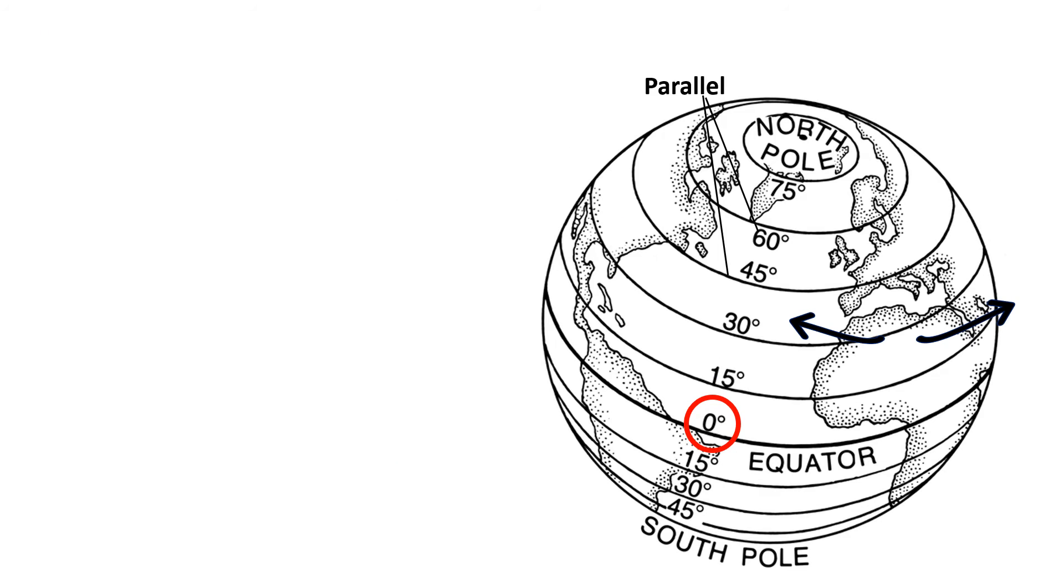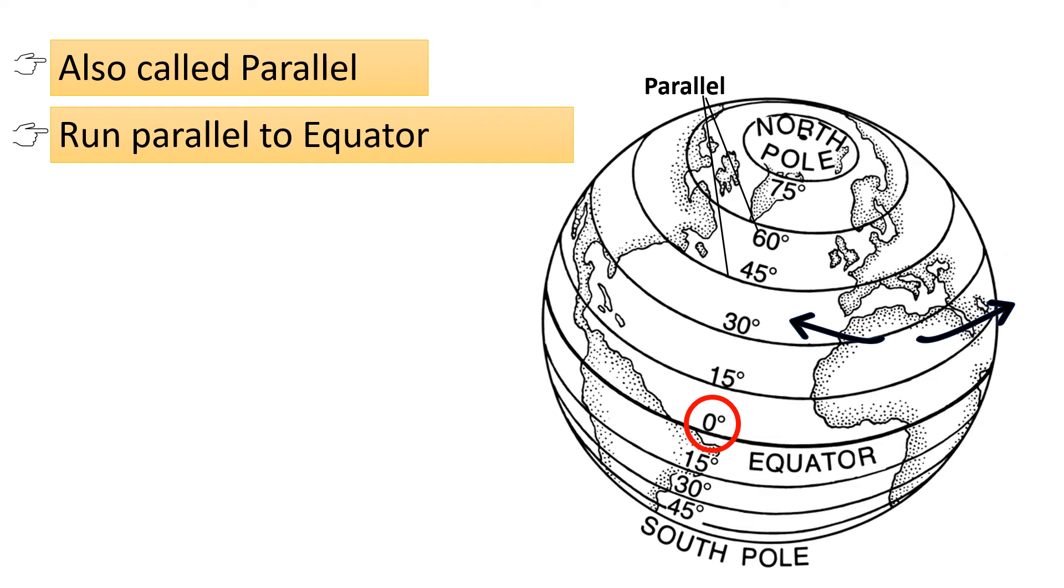Now focus on latitude lines. Latitude lines, also called parallels, are imaginary lines that run parallel to the equator on the Earth's surface.